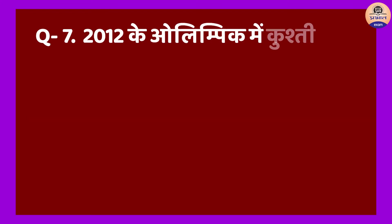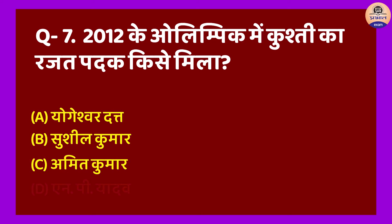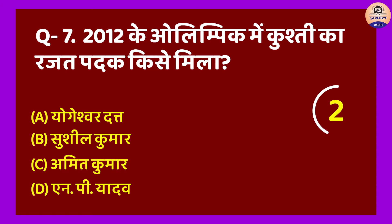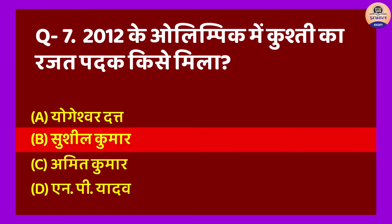Question No. 7: 2012 ke Olympics mein kushti ka rajat padak kise mila? A. Yogeshwar Dutt, B. Sushil Kumar, C. Amit Kumar, D. N.P. Yadav. Sahi jawab hoga Option B. Sushil Kumar ko 2012 ke Olympics mein kushti mein 66 kilogram freestyle mein rajat padak pradan kiya gaya.